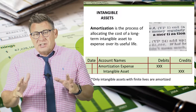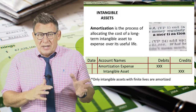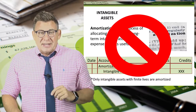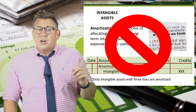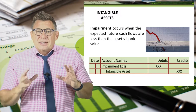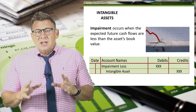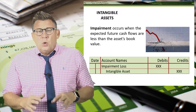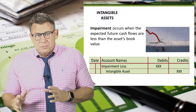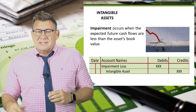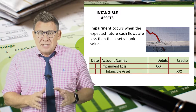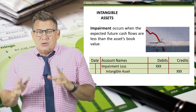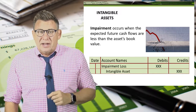Recall that amortization is the process of allocating costs of an intangible asset to expense. But intangible assets with indefinite useful lives are not amortized. Instead, they are tested for impairment annually. Impairment occurs when the expected future cash flows are less than the asset's book value. When this happens, we record impairment loss by debiting an account impairment loss and crediting the intangible asset.